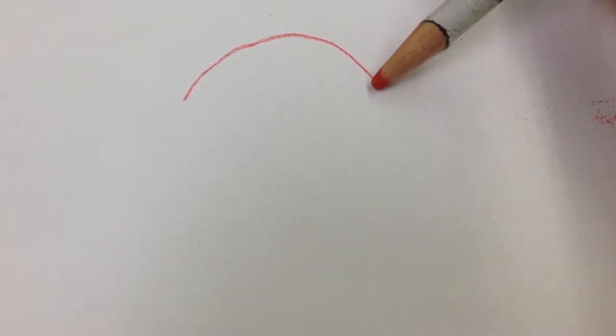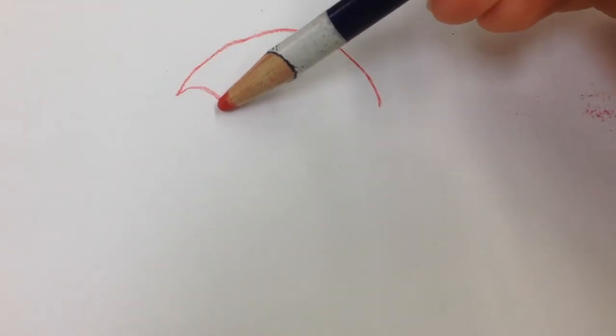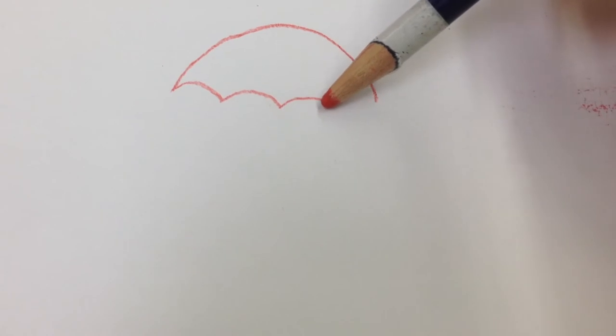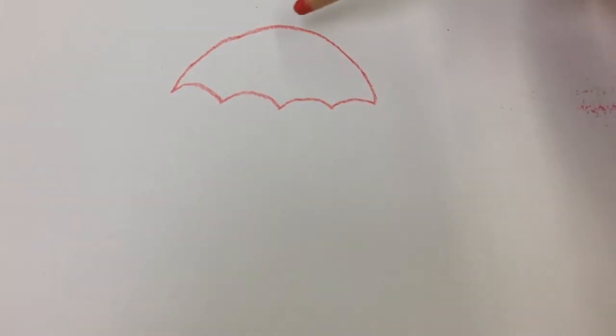First we draw an arch, then we'll draw four small arches below, then we'll draw the top part of the umbrella.